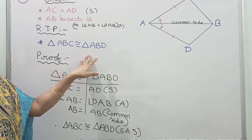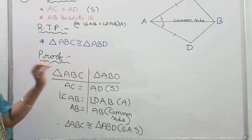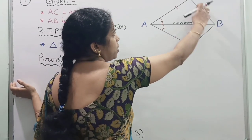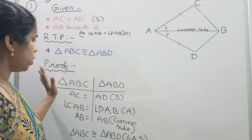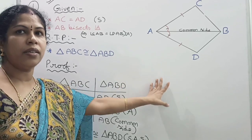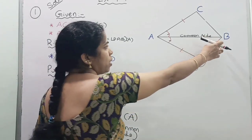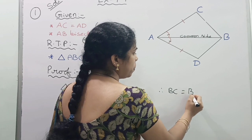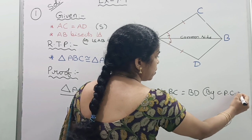They asked one more question related to this sum: what do you say about BC and BD? If two triangles are congruent, the remaining corresponding parts are also equal. Therefore, BC is equal to BD by CPCT.